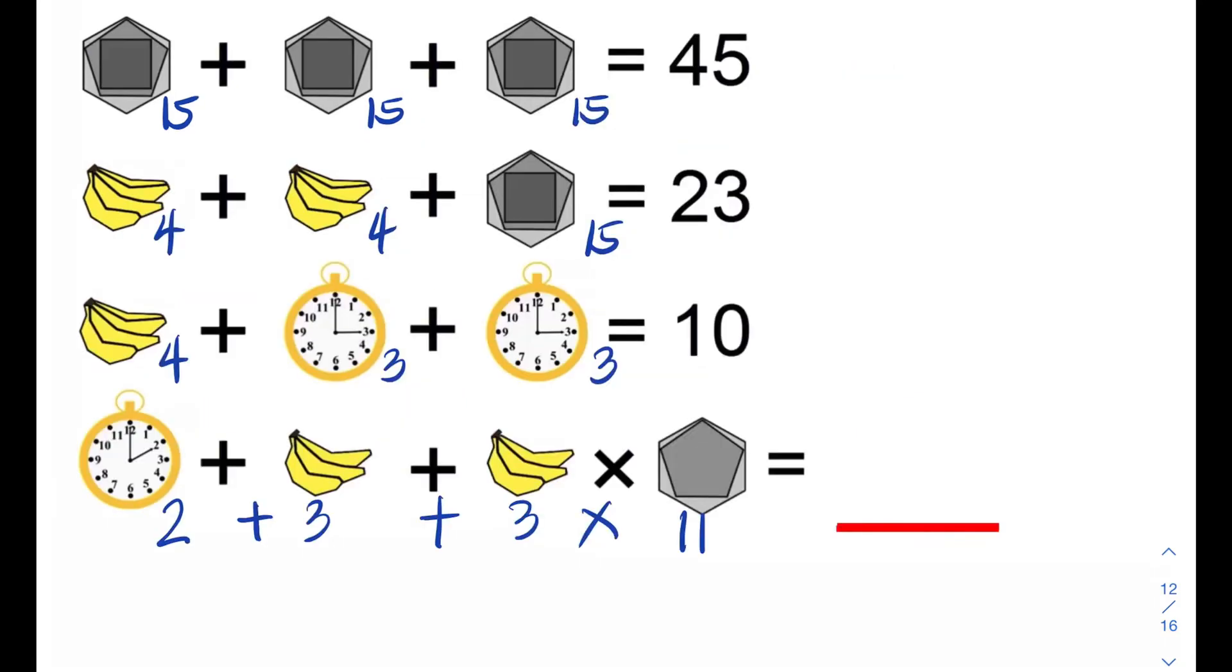In simplifying this expression, we need to use the order of operations. First, we need to multiply 3 times 11, which is 33. So the new expression is 2 plus 3 plus 33. And finally, we can simplify the expression from left to right. 2 plus 3 is 5, plus 33 is equal to 38. So the value for this problem is 38.